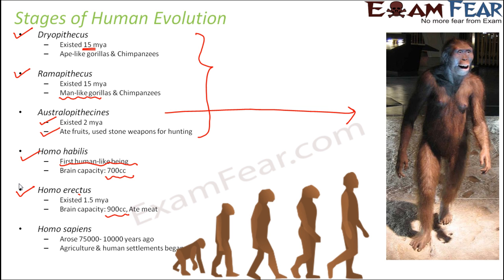Finally came Homo sapiens, who arose around 75,000 years ago. Once Homo sapiens came into the picture, many developments followed: human settlements started, agriculture began, cave art began. Because Homo sapiens had a very developed brain, they utilized it to do many new things, and that is how the entire civilization started. These are the various stages through which human evolution progressed, and how Homo sapiens came into existence.